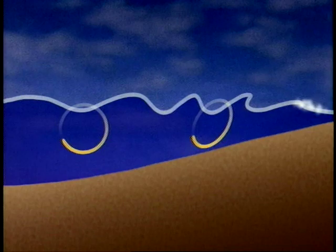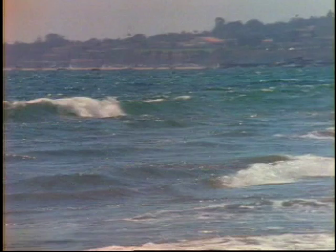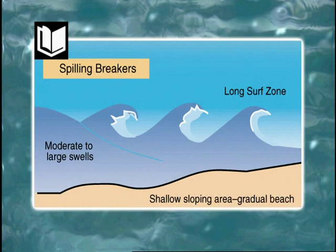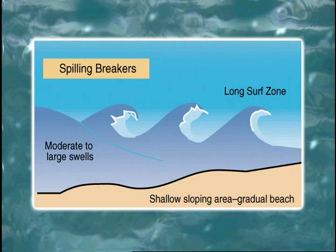This area is known as the surf zone. On a gradually sloping beach, a moderately large swell will form spilling breakers. These waves break far from the shore and continue to break all the way to the beach. The water is usually turbid in the surf zone due to the sediment that is disturbed over a wide area.